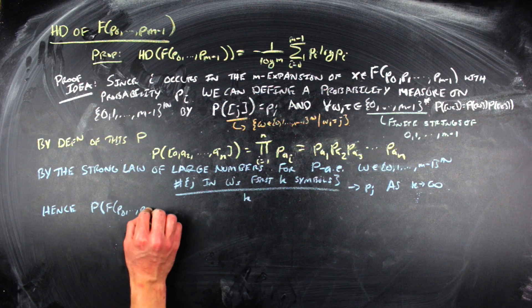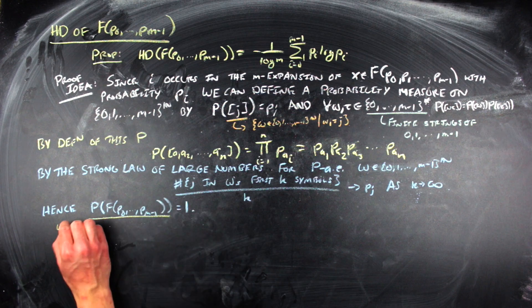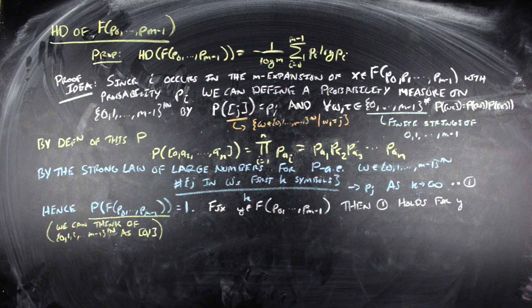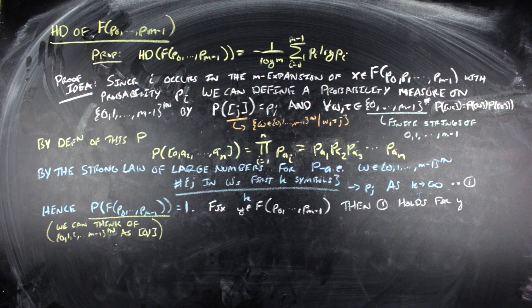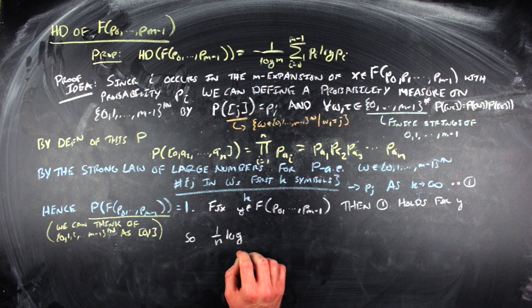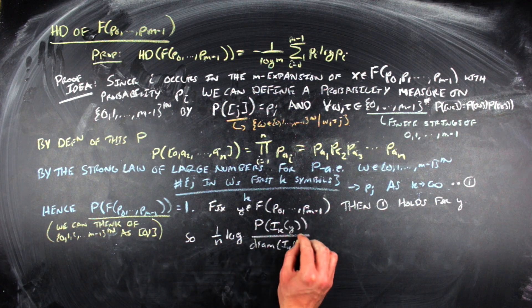Hence the probability of F of the probability vector is going to be equal to 1, because everything that doesn't live in that set fails the above condition, and that fails on a set of P measure 0. So we fix a particular Y within this set, and we set I sub K of Y to be the interval determined by the first K digits in Y's symbolic representation. So each of these I sub K of Y's has length or Lebesgue measure 1 over M to the Kth power.